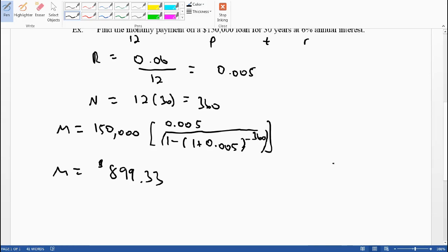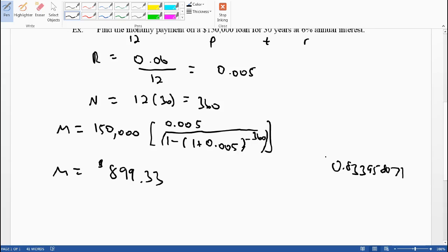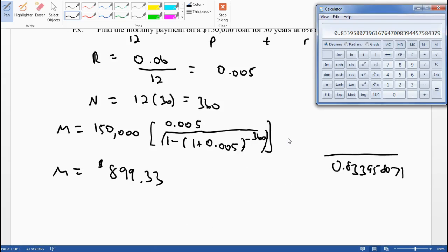I'm tempted to write that down, and in fact I'm going to. 0.833958071. I'll use that. The more numbers you write, the more accurate your results are. I want to use the memory - actually, let me just write it down.